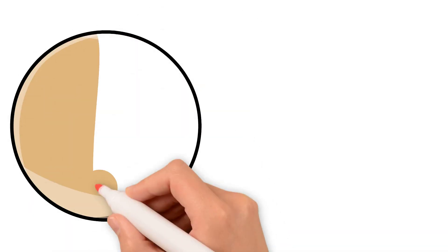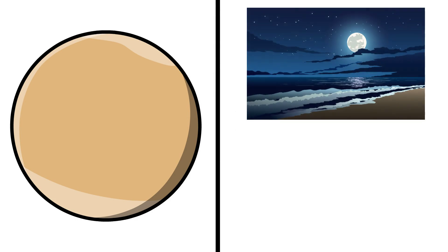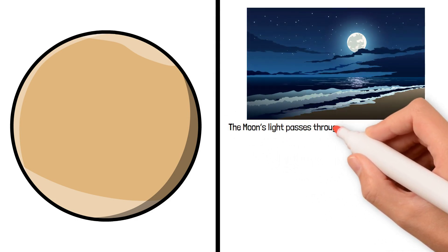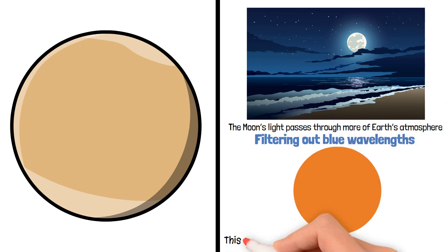Another factor that contributes to this illusion is the color of the moon. When it's low on the horizon, the moon's light passes through more of Earth's atmosphere, filtering out blue wavelengths and giving it a reddish or orange hue. This color contrast can make it appear even larger.